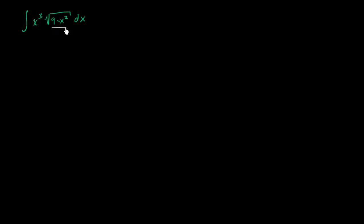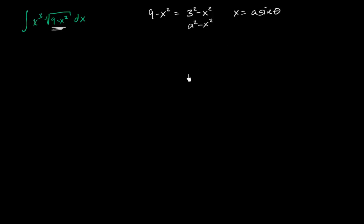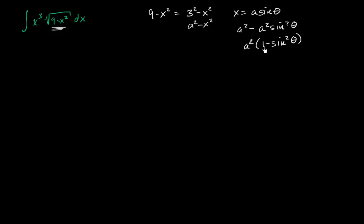We have a big clue here. We have something of the form 9 minus x squared, which can be viewed as 3 squared minus x squared. Any time you have the form a squared minus x squared, it might be useful to make the substitution that x is equal to a sine of theta. Then a squared minus x squared becomes a squared minus a squared sine squared theta, which is a squared times 1 minus sine squared theta — that's a squared times cosine squared of theta, which might be a useful simplification.